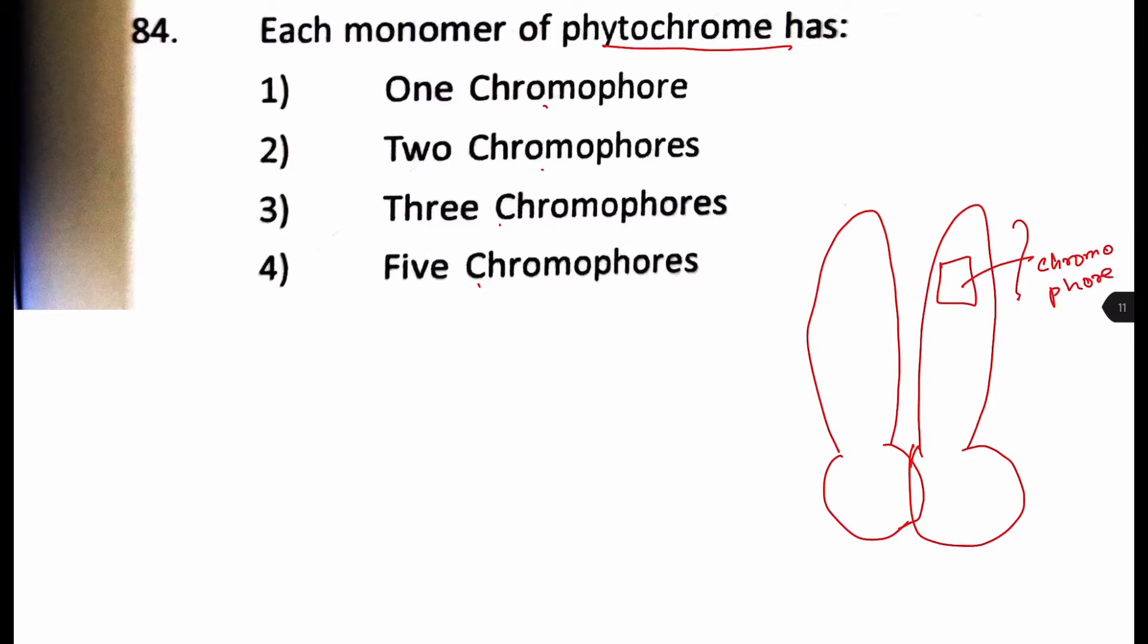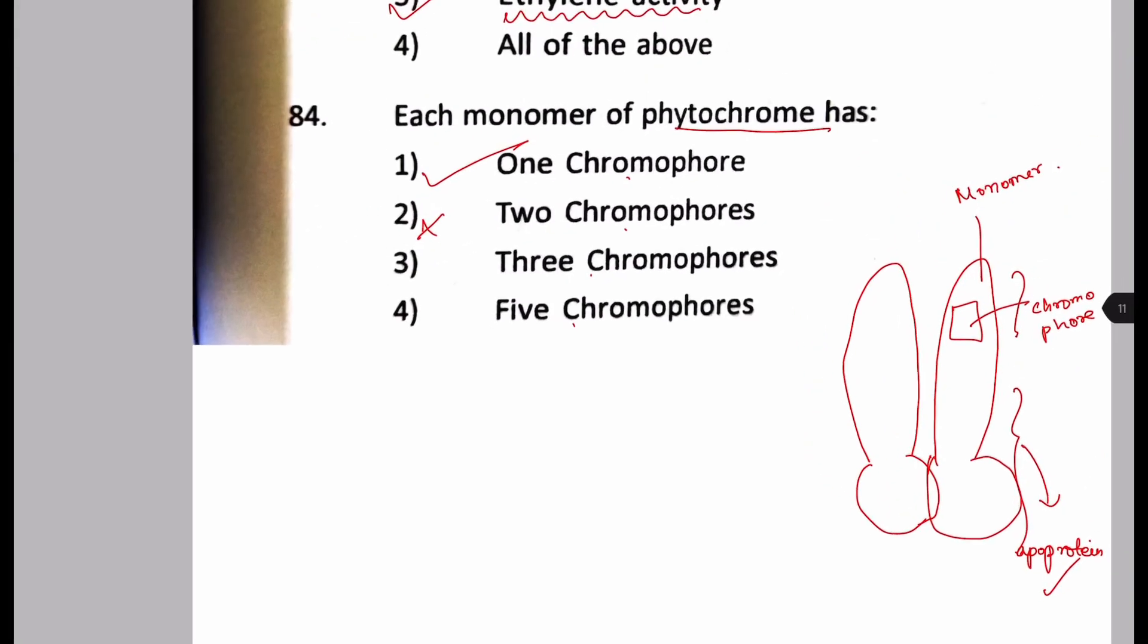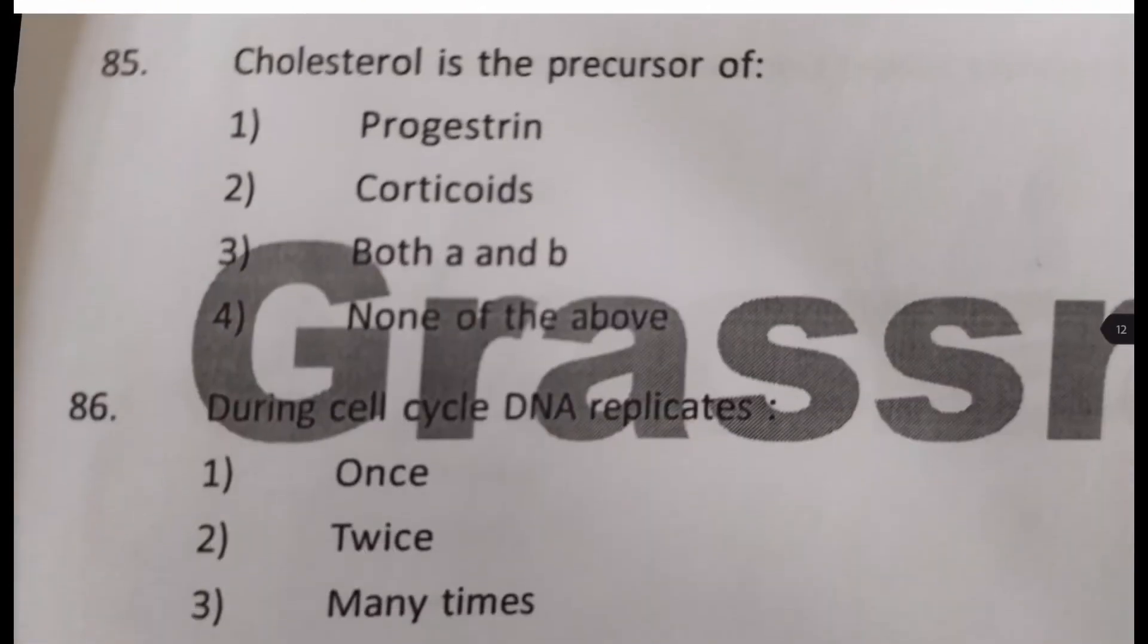But, you have to notice that they have asked each monomer. So, among the two dimers, we are talking about only one of it. One part of it because they have asked for a monomer. And one monomer itself has one chromophore and one apoprotein. So, here it won't be two chromophores but one chromophore. So, be careful. One is the correct answer. Okay, next question.